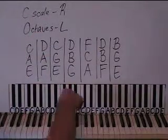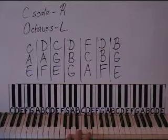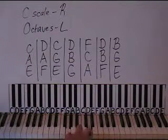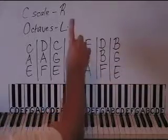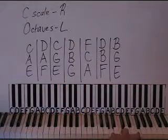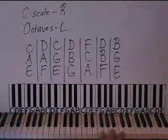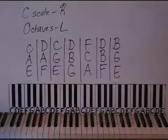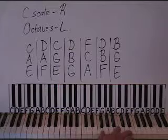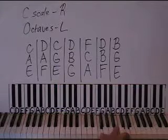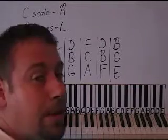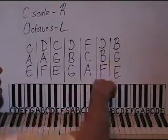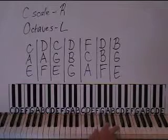Moving on: G B D, that is a root position G chord. I threw you an easy one there. This one, A C F, if you rearrange it you'll see it's an F chord, F A C. The next one, F B D, is the B diminished chord, B D F. And this last one is the E minor, E G B, I put that one in root position.